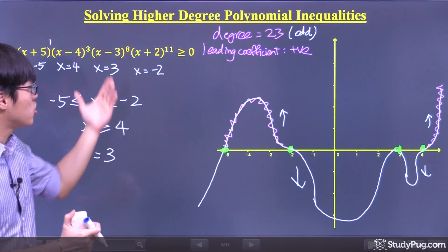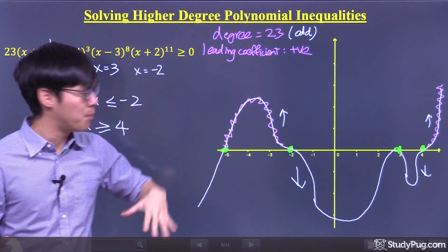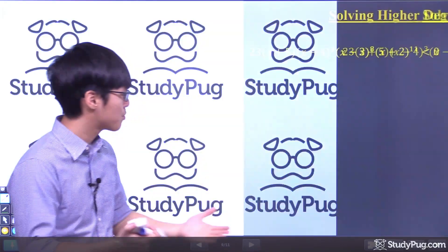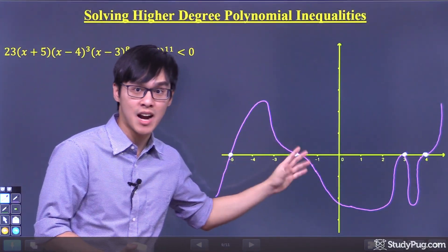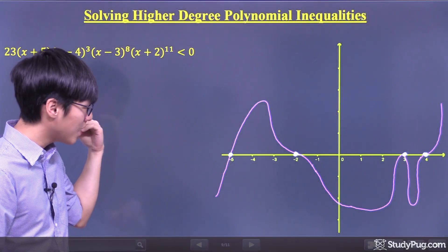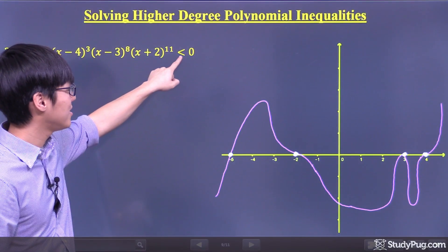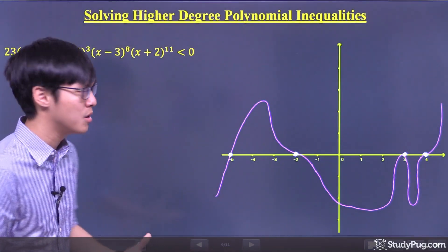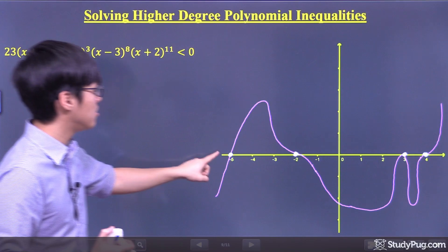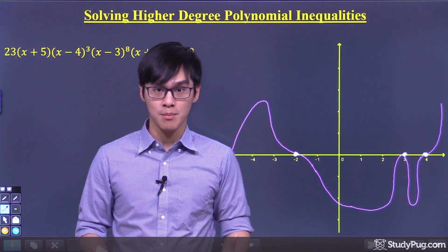I have pre-drew the graph for you. This is the exact graph I just drew. Now we're looking at less than zero. Which part of the graph is less than zero? Well, first off, we need to know if the zeros are included in the endpoints.